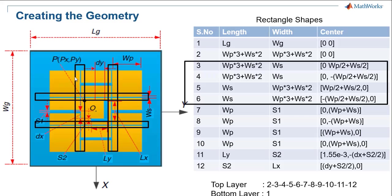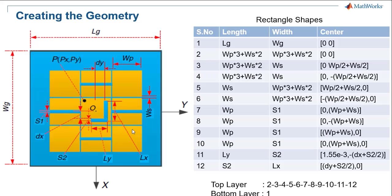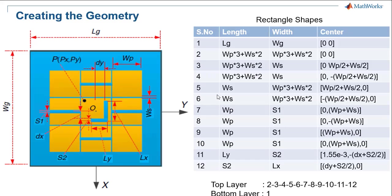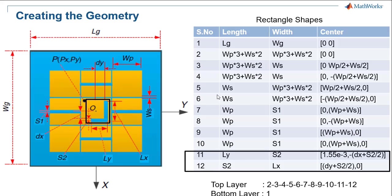The next step is to create four slots with length WP and width S1 with different centers as shown in the table. The last step is to create the L-shape using two rectangles as shown in the table. To create this structure, create one square and then subtract all the rectangles from that square to obtain the final structure.